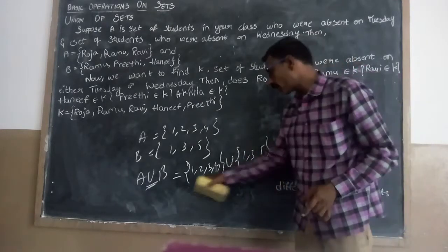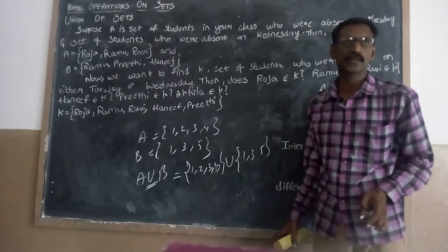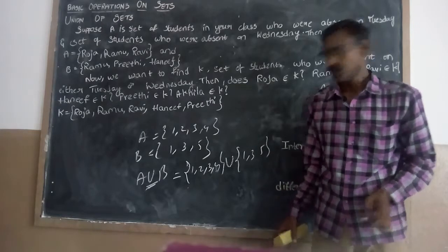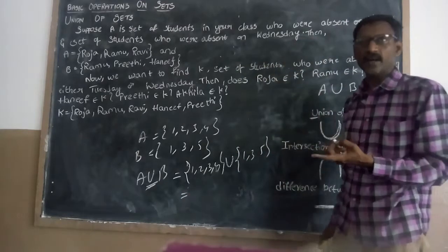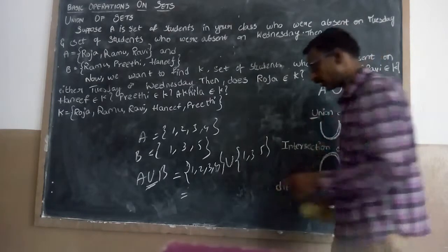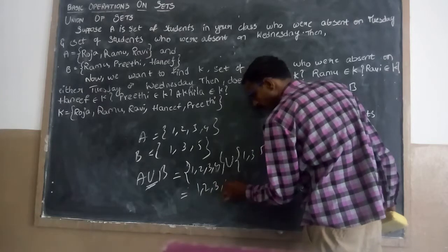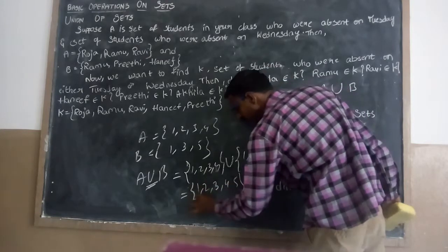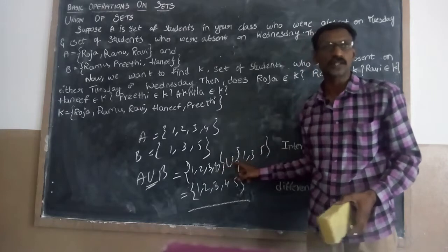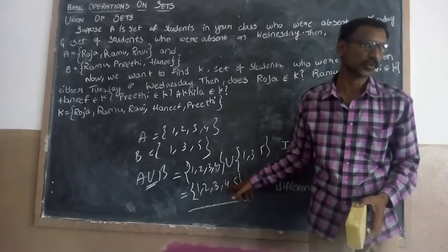We have some common elements — 1 and 3. Here 1 and 3 are repeated. But whatever it may be repeated or not repeated, write each element only once. So 1, 2, 3, 4 and 5 — that is the union. If an element is repeated two times, we should write it only one time. This is called the union process.